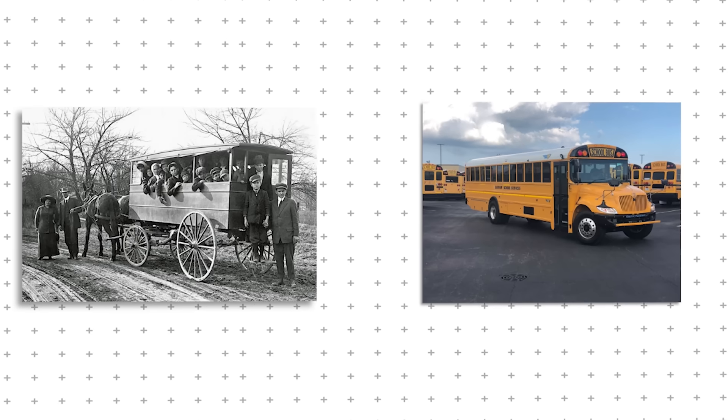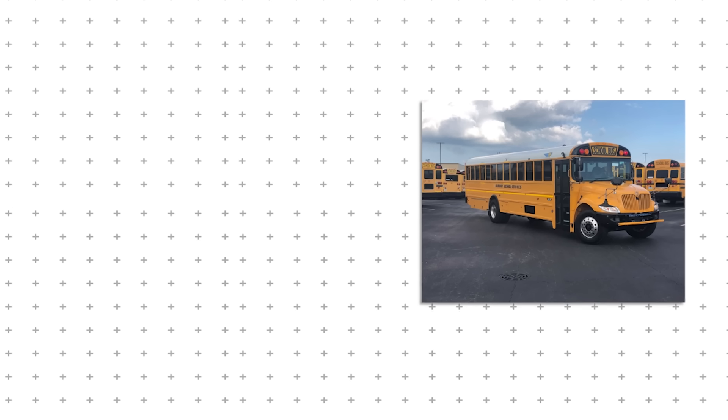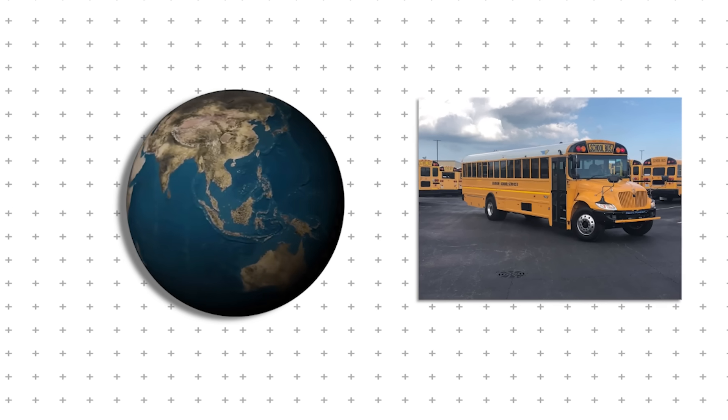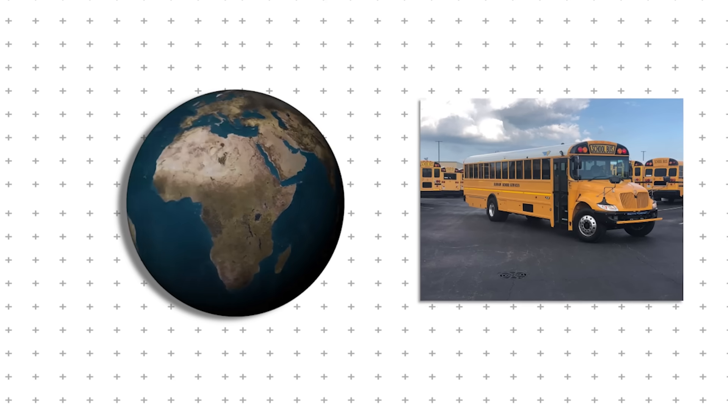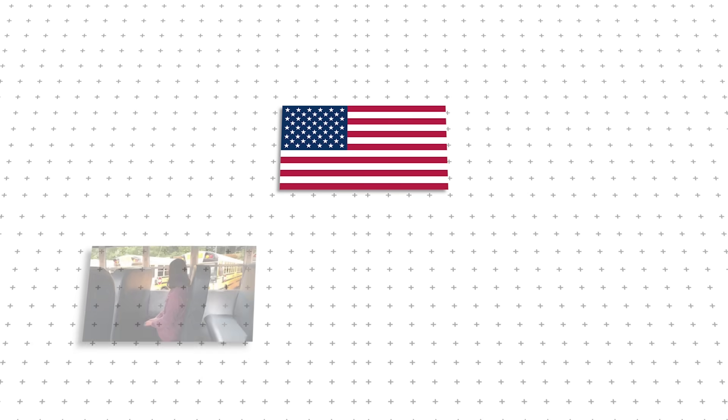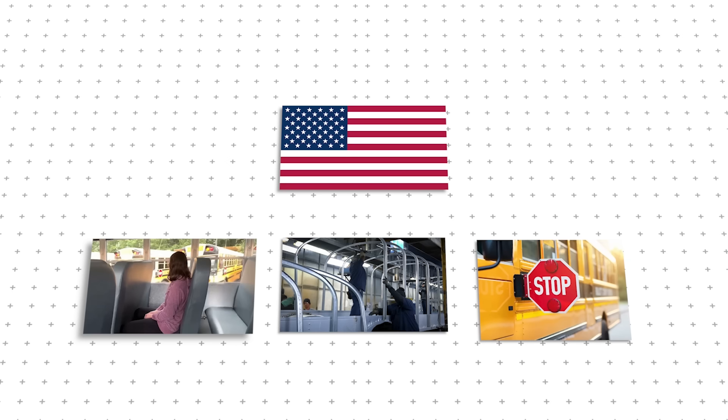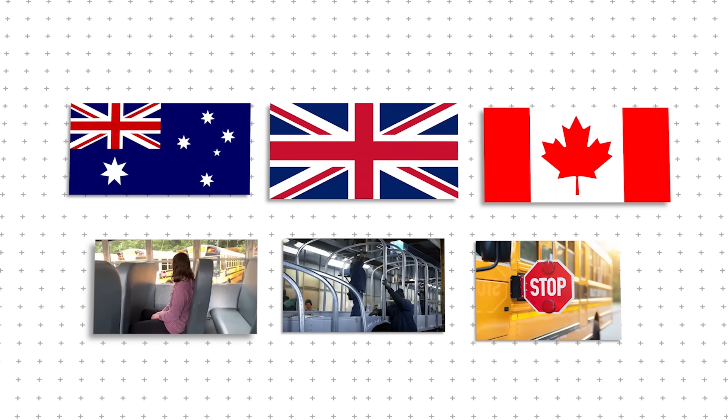With all these improvements, modern school buses are a far cry from their early, dangerous designs. But that raises a new question. How does this level of safety compare to the rest of the world? Are American school buses truly the safest, or have other countries found an even better way? In the U.S., school buses are designed around compartmentalization, reinforced steel frames, and strict traffic laws. But in places like the United Kingdom, Australia, and Canada, the approach is different.